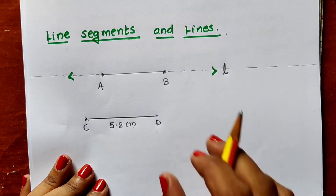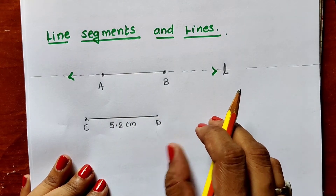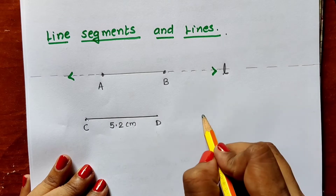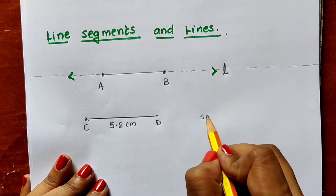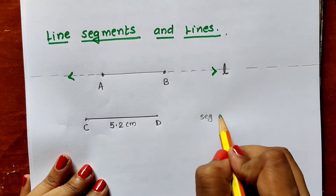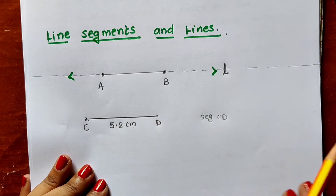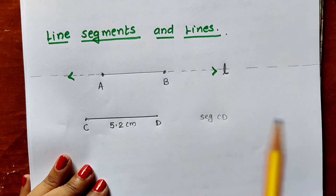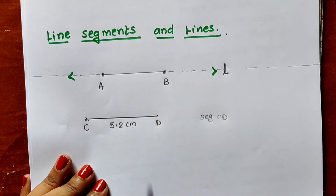A segment always has endpoints. A segment cannot be extended on either side. A segment always has the exact measurement — 5.2 cm means 5.2 cm only. A segment can be written using the shortcut like seg CD. In this way, you can differentiate between line segment and line.